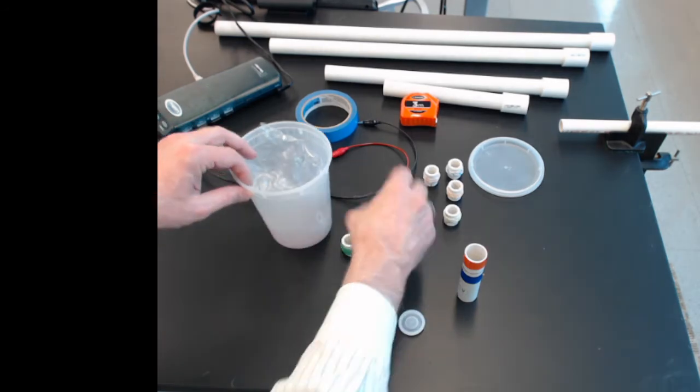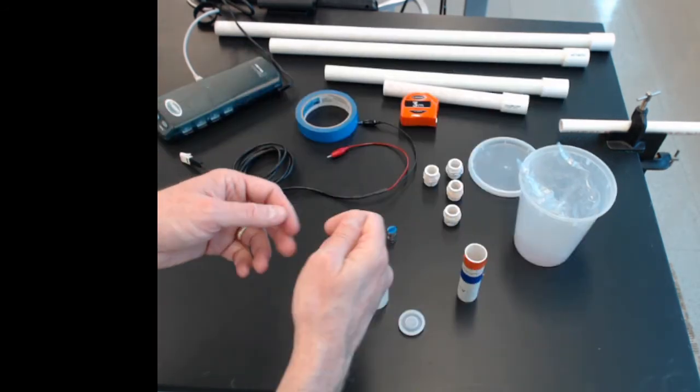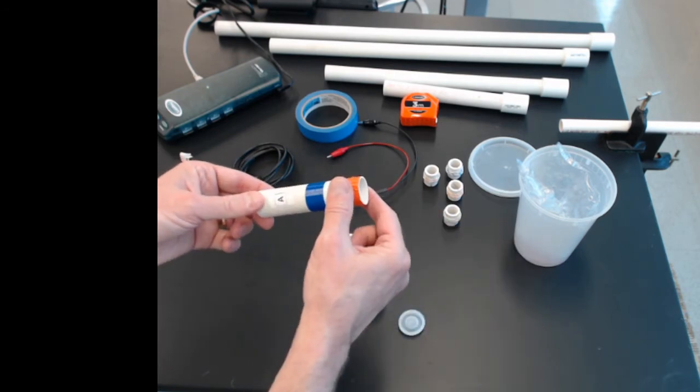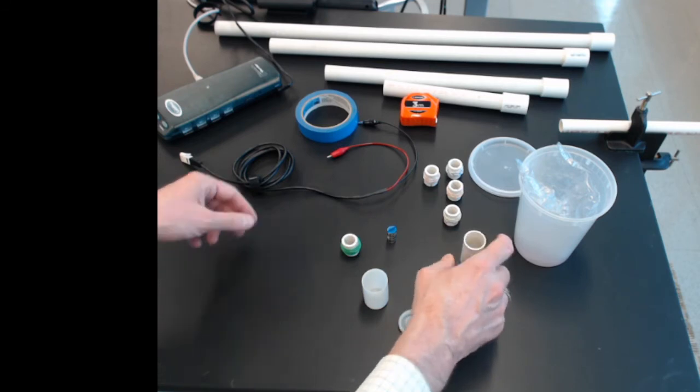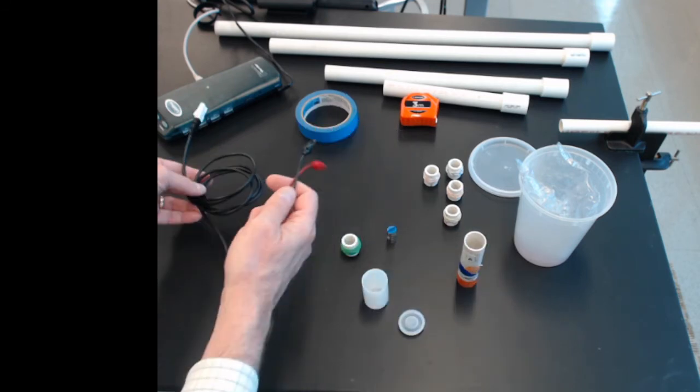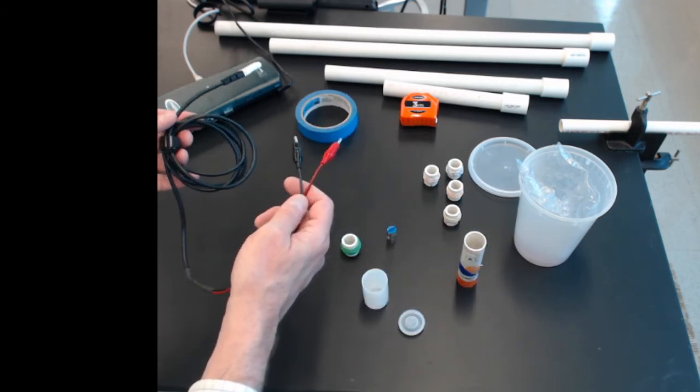To measure, we'll wrap some wires around the PVC pipe. And then to measure the voltage, we'll just use the same voltage probe from Vernier that we used in the capacitor.